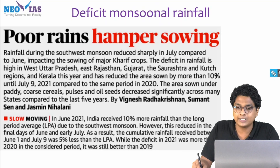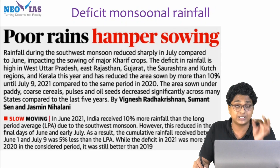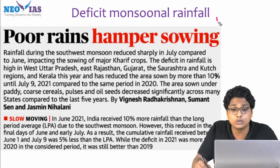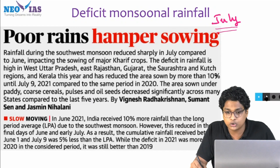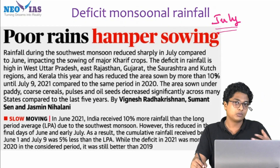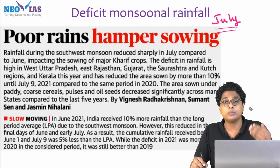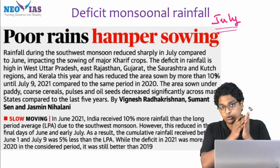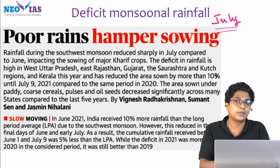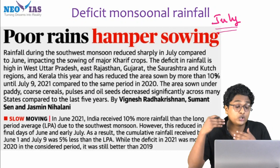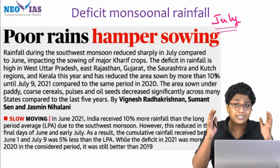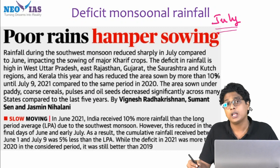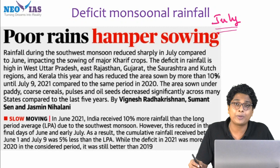Moving on to the next topic: the deficit monsoon rainfall in the month of July. Initially when the monsoon was making onset, it was forecasted that we would be having good monsoon rainfall. June till the last week it was going good, but from the end of June and July onwards till now, the monsoon is in deficit. Because of this deficit rainfall, the sowing of the kharif crop is being delayed.